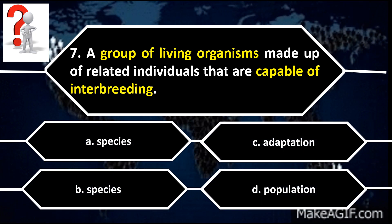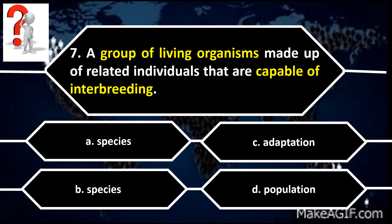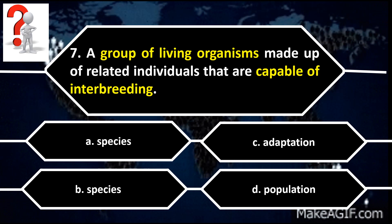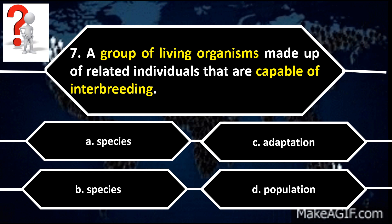Number 7. A group of living organisms made up of related individuals that are capable of interbreeding. A. Evolution. B. Species. C. Adaptation. D. Population.